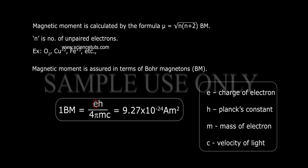Where e is charge of electron, h is Planck's constant, m is mass of electron, and c is velocity of light.